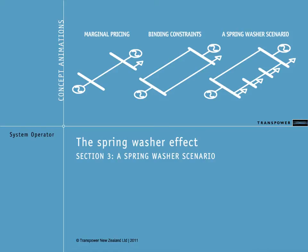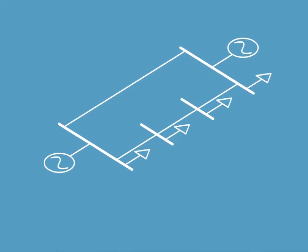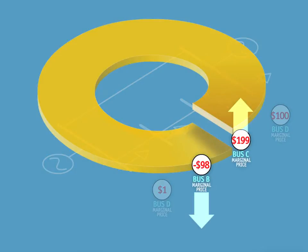Now that we know about the way SPD determines marginal prices, and how Kirchhoff's law imposes constraints on parallel transmission lines, we will be able to see how the very high and very low prices of the spring washer effect come about.